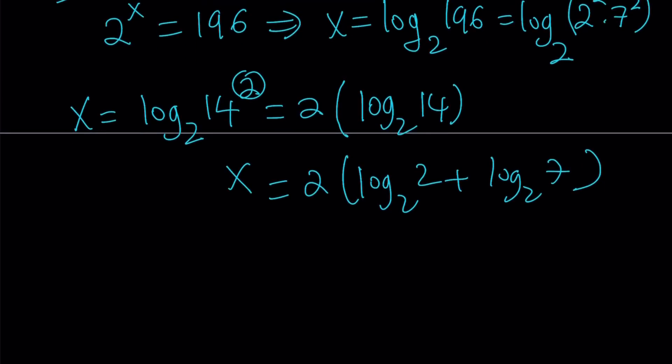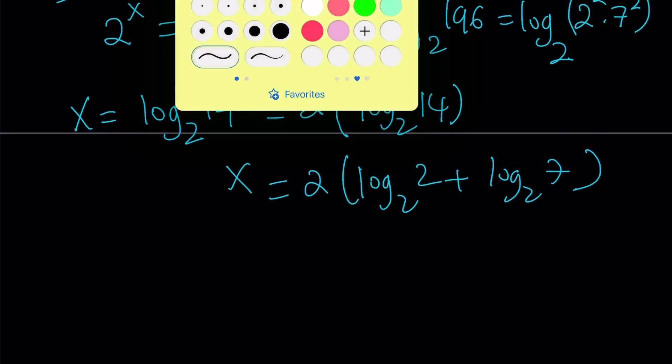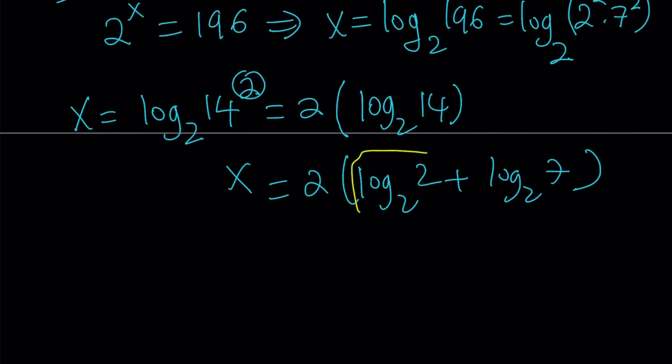So now log 2 in base 2 is going to be 1. So this is 1. Because when those numbers are equal, it's always 1. So now from here, we get something like this. x equals 2 times 1 plus log 7 in base 2. Awesome. And you can go ahead and distribute if you want, but I'm going to leave it like that for now.